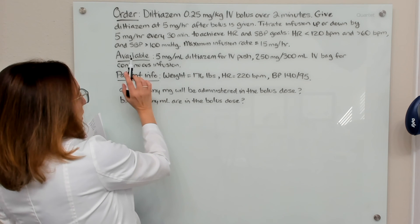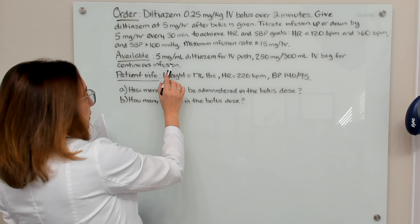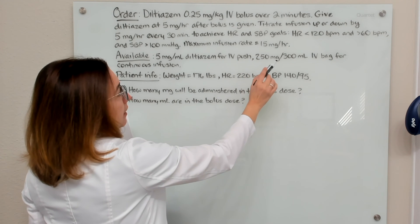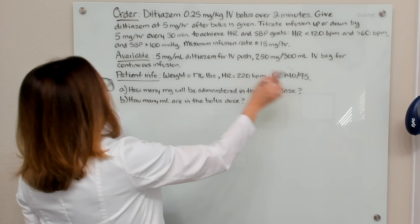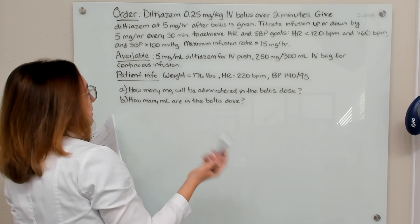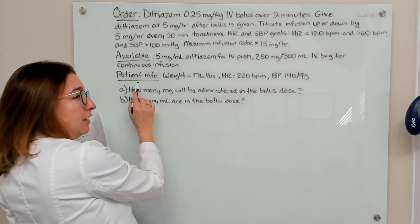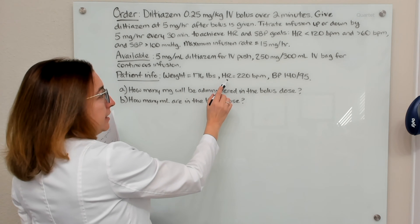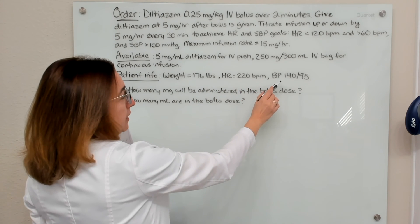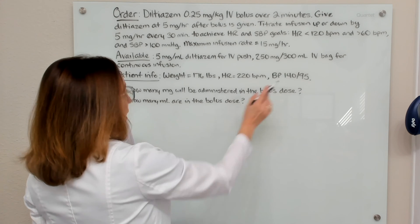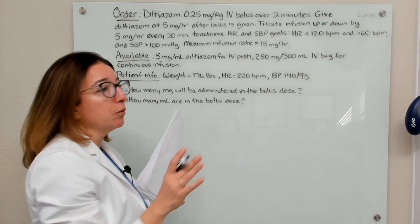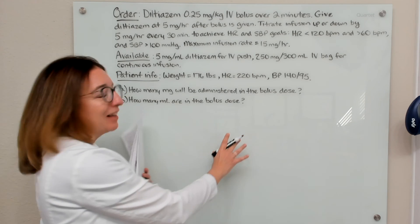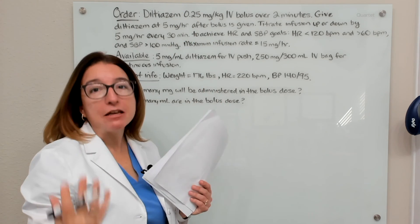What we have available is 5 milligrams per milliliter diltiazem for the IV push, and we also have a 250 milligrams in 300 mL of solution IV bag for the continuous infusion of diltiazem. Our patient's weight is 176 pounds, their current heart rate is 220 beats per minute, and their blood pressure is currently 140 over 95. There are five different questions we're going to work through with this example.